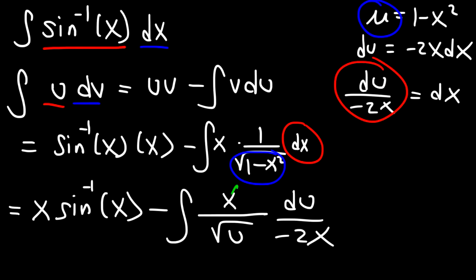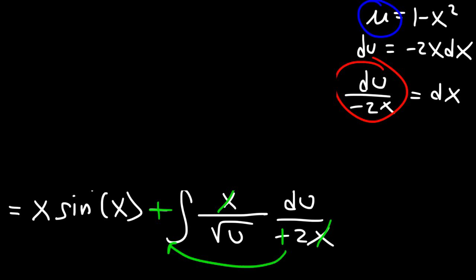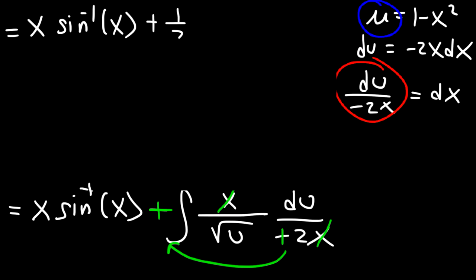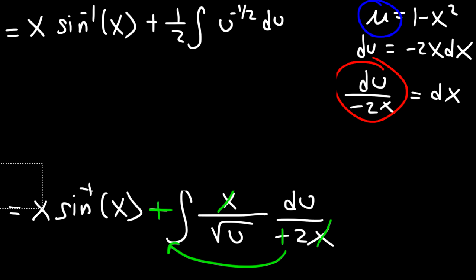We can cancel x with x, and also cancel the negative sign to make it positive. Moving the 2 to the front, this becomes x arc sine of x plus one half times the integral of 1 over the square root of u, du. Note that 1 over the square root of u is the same as u to the negative one half, so we can use the power rule on that expression.